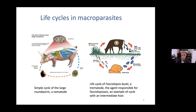The life cycles I'm going to consider: on the left is the simple cycle — for instance a roundworm or a nematode. A pig ingests the eggs, they develop inside the pig and become adults, which produce more eggs. These eggs are defecated into the environment, and another pig eats them, and so the cycle continues.